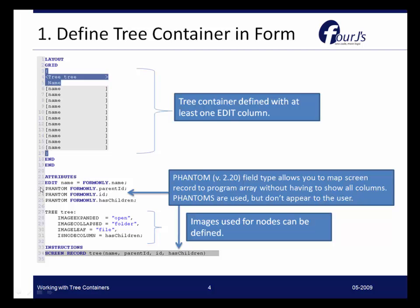Down below you'll see that additional fields are defined here: the parent ID, the ID, and has children. There is a new form type called phantom, which allows you to define a field but not show it to the user. The screen record is defined for this tree container and has all four of those fields as part of it, but only one of them is going to show — the other three are phantom. Phantom fields can be used outside of tree containers as well; they are a new field type that can be very useful especially for mapping screen records to program records.